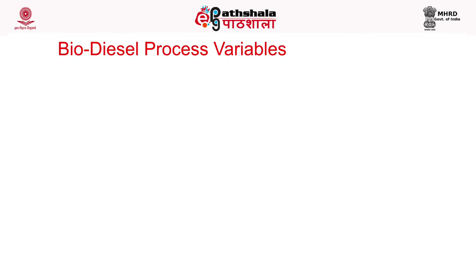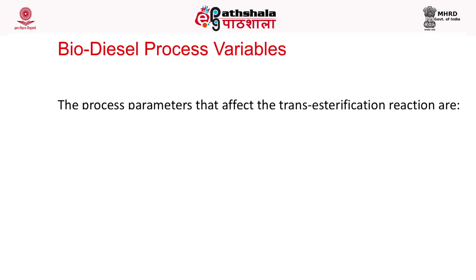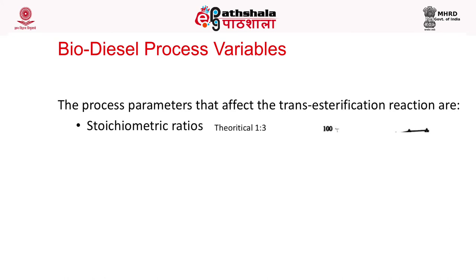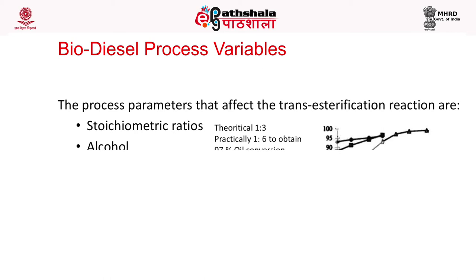The variable parameters in biodiesel production are: first, the stoichiometric ratio of oil to alcohol, which is 1:3, but to drive the reaction forward, a 1:6 molecular ratio is normally used. Second is the choice of alcohol — methanol or ethanol. If methanol is used, we are still dependent on petroleum products, but if ethanol is used, it becomes a totally bio-based process since ethanol is produced from plant materials such as sugar and starch.